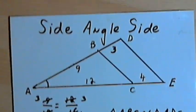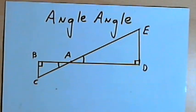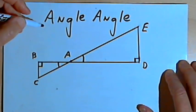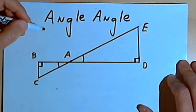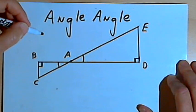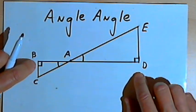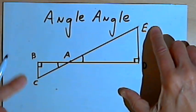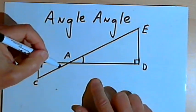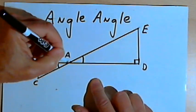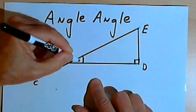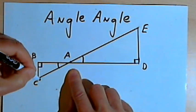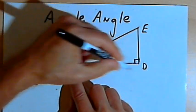Let's do angle-angle similarity. With angle-angle similarity, we say that two triangles are similar if they have two pairs of corresponding angles that are congruent. Here I've got two lines, BD and CE, which intersect at point A, forming vertical angles. So the two angles formed there are congruent: angle BAE is congruent with angle DAE.